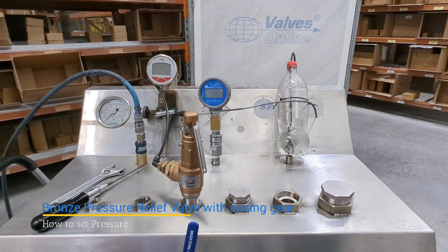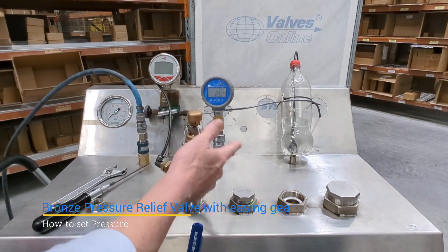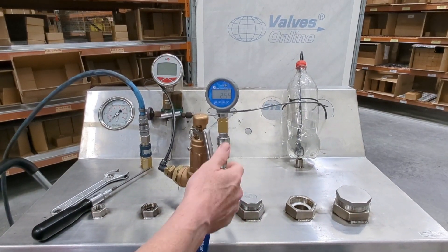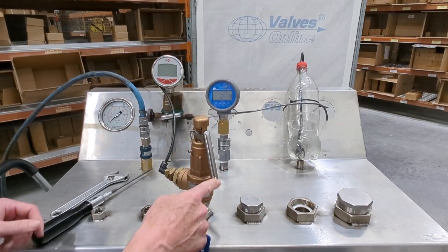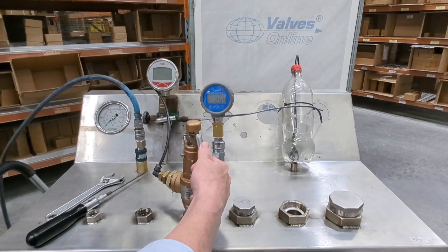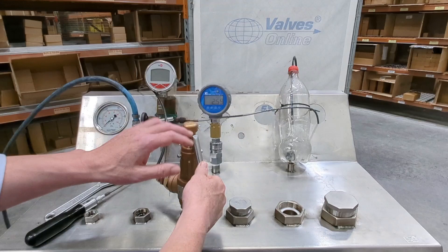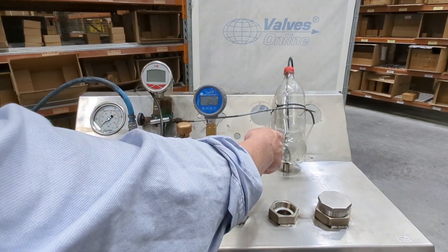Here we've got our bronze pressure relief valve with easing gear. We call it easing gear; some people call it a relief lever. Basically, this is a manual override. If I pull this up, you can see a bit of air will come out the top here, but it will also flow through the outlet port, which you can see in our highly technical bottle over here.